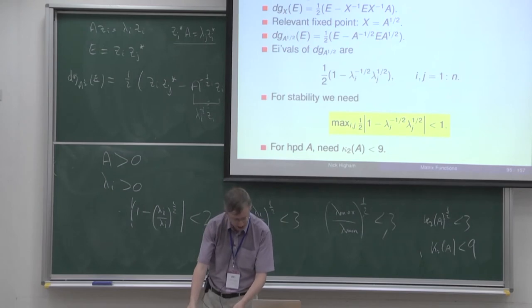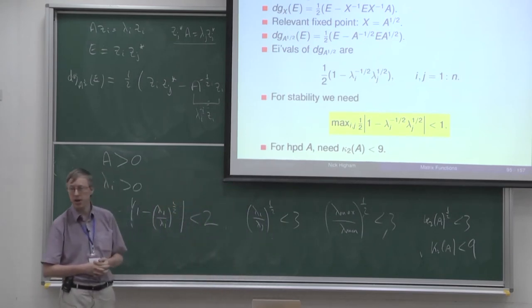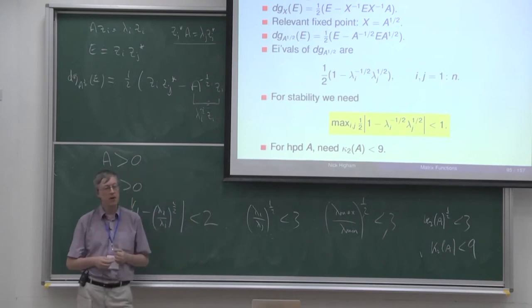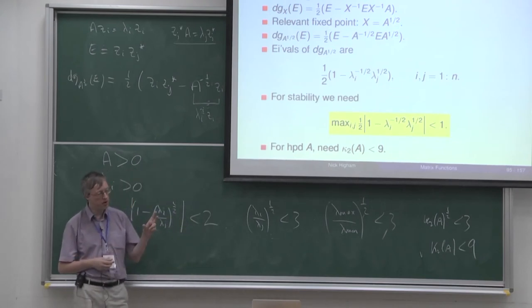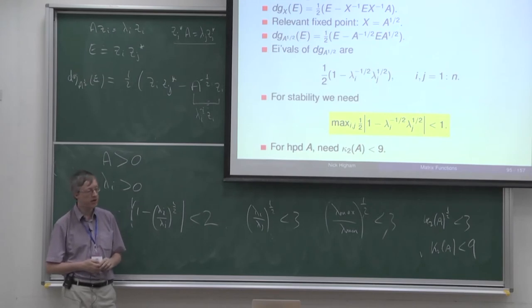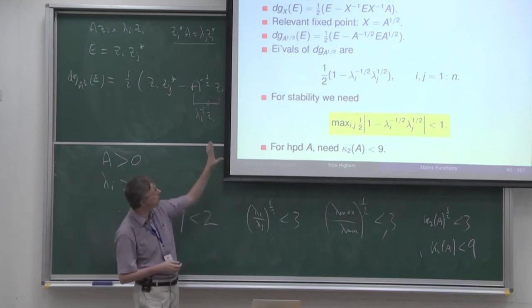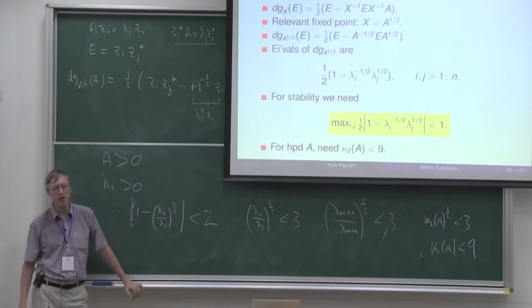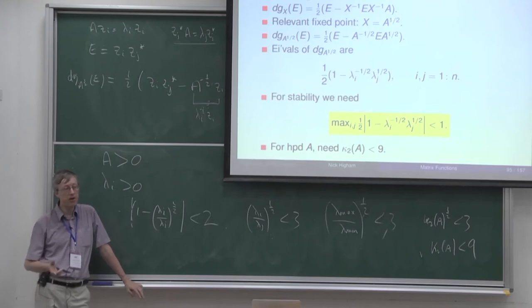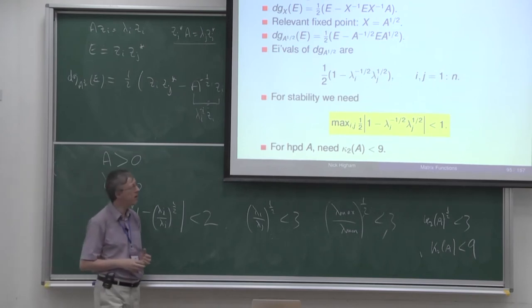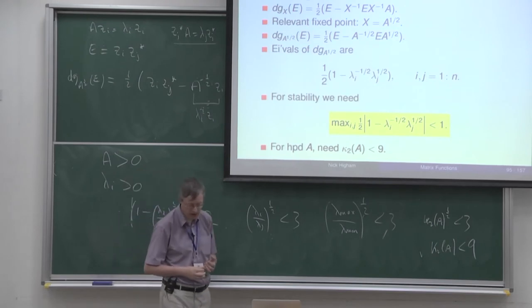There are all sorts of ways of modifying this iteration to make it stable. One useful idea is to convert this single iteration into two coupled iterations: one converging to A^{1/2} and the other converging to A^{-1/2}. Done in the right way, that is numerically stable — it will always satisfy the condition that the Fréchet derivative has bounded powers. There are other areas in numerical analysis where coupling iterations improves stability. That is one way you can stabilise the square root iteration.